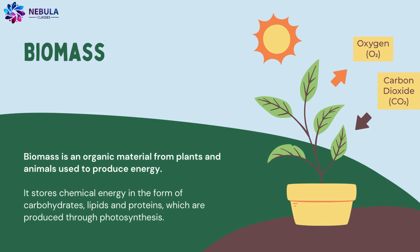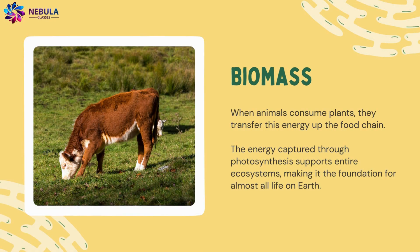Biomass is an organic material from plants and animals used to produce energy. It stores chemical energy in the form of carbohydrates, lipids, and proteins, which are produced through photosynthesis. When animals consume plants, they transfer this energy up the food chain.